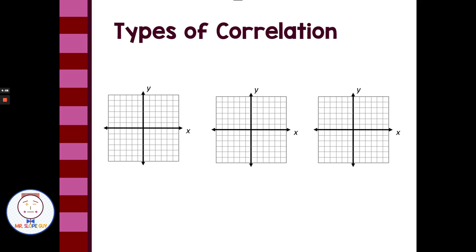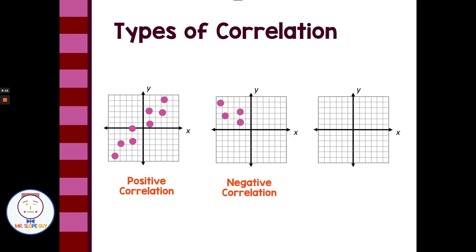We have three types of correlation. We have a positive correlation, where points are flowing upward from left to right. We have negative correlation, where there's a flow of points downward from left to right, like a negative slope. And we have the possibility of no correlation or no relationship, where our ordered pairs on the scatterplot just look random. Make sure you write down each of those different types: positive correlation, negative correlation, or no correlation at all.